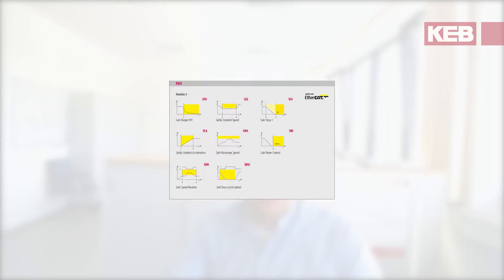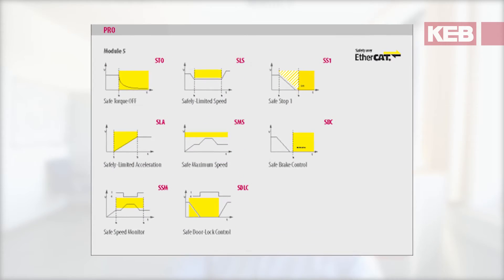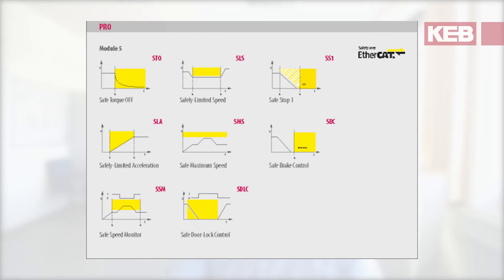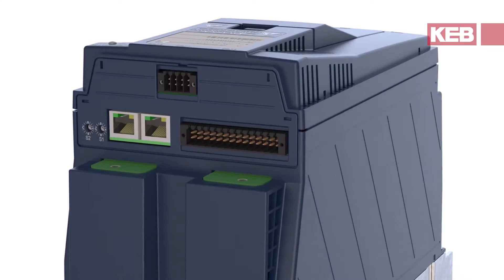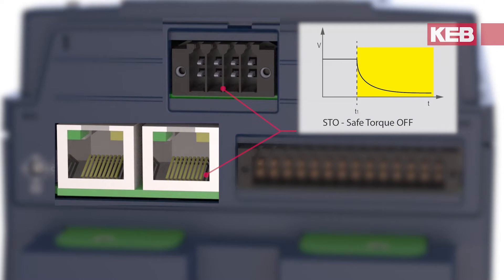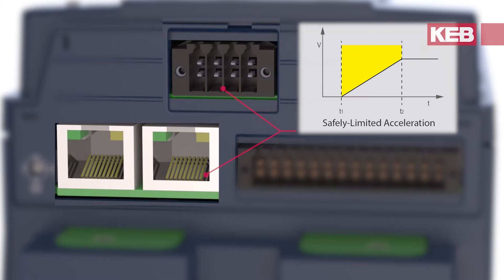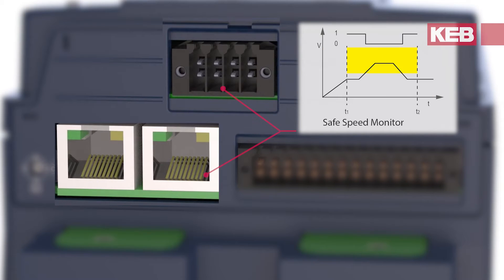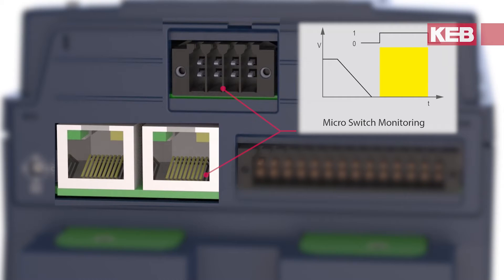Three variants with different functional safety architecture are available at KEB drives. The focus in this short video is on the pro encoderless safety variant. Basic functions like STO and SPC can be enlarged by further safety functionalities like SLA — safely limited acceleration — and SDLC safety door control.